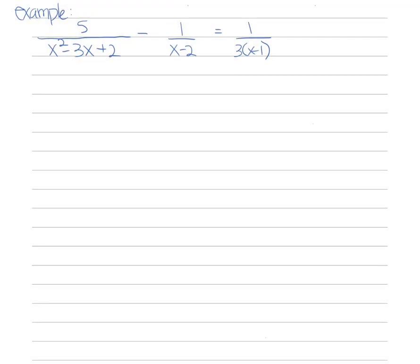Here is another example: 5 over (x squared minus 3x plus 2) minus 1 over (x minus 2) equals 1 over (3x minus 1). Since the denominators may share factors, we first factor the first denominator: x squared minus 3x plus 2 factors into (x minus 2)(x minus 1). Indeed, the denominators share common factors.